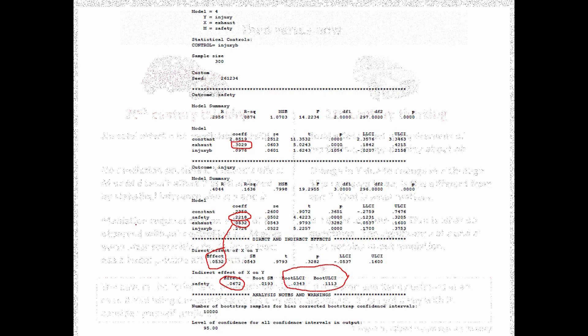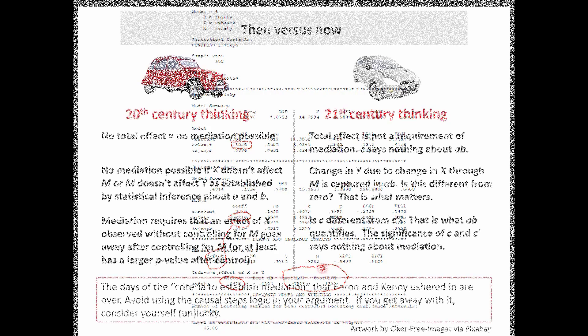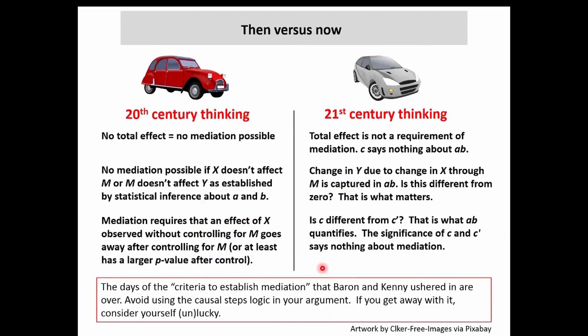You know the total effect is the sum of the direct and indirect effect. You'll still hear people talking about the criteria to establish mediation that Baron and Kenny made popular, but the days of those criteria are over. We don't use those criteria to establish mediation anymore. I would recommend avoiding the use of that causal steps logic in your argument — you may still get away with it, but that's becoming harder and harder with each passing year.